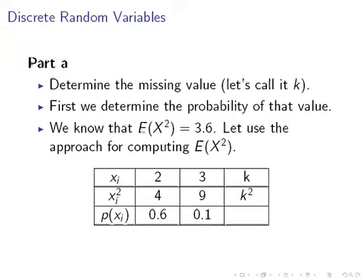We have three values: 2, 3, and k. We're going to square those values, so we have 4, 9, and k squared. That's the second row of that table. And we're going to look at the probabilities for each of those outcomes. The probability of 2 is 0.6, the probability of 3 is 0.1. Now, we have to find out what the probability of k is.